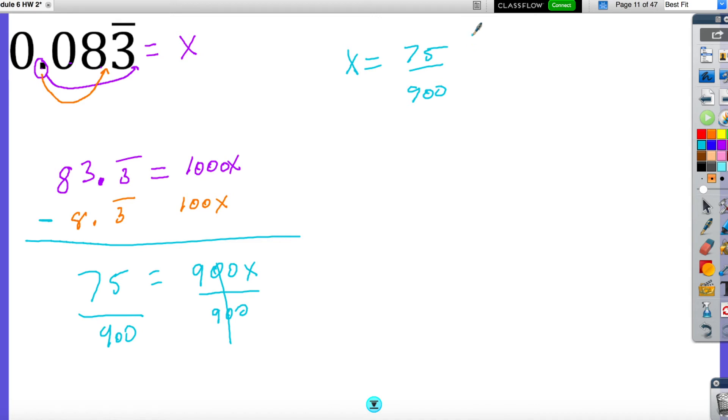Then what I'm going to do is divide these both by 5. So if I did 75 divided by 5, this would be 15. And then if I did 900 divided by 5, that would give me 180. Now these are both still divisible by 5. So 15 divided by 5 is 3, and 180 divided by 5 is 36.